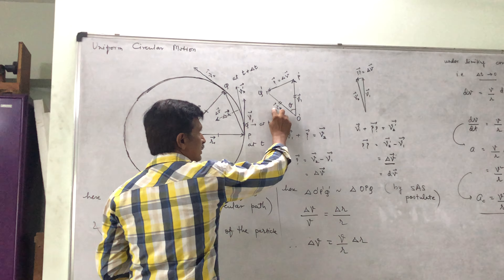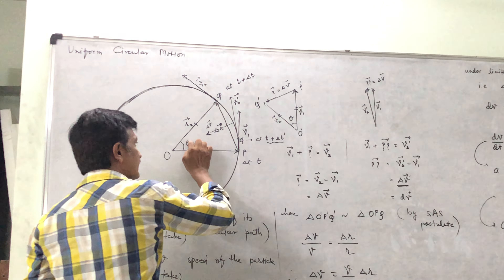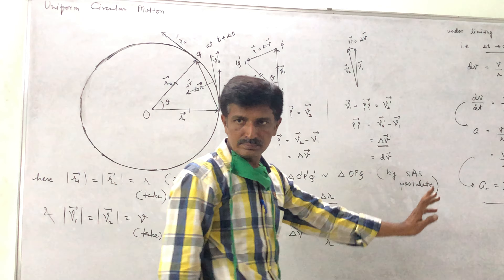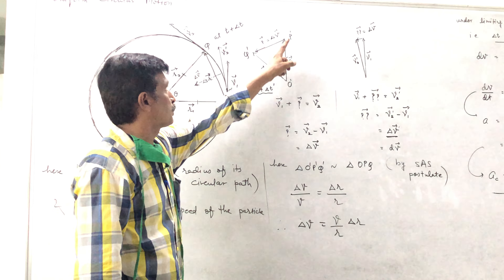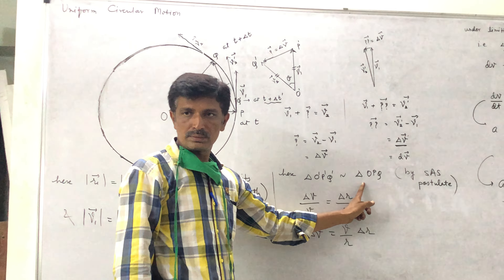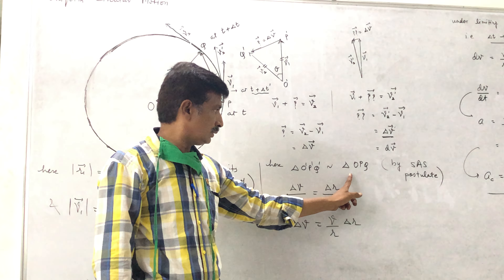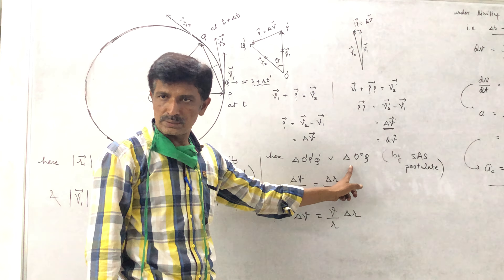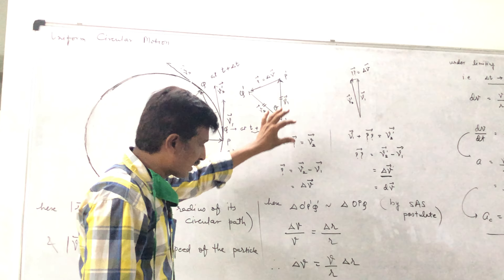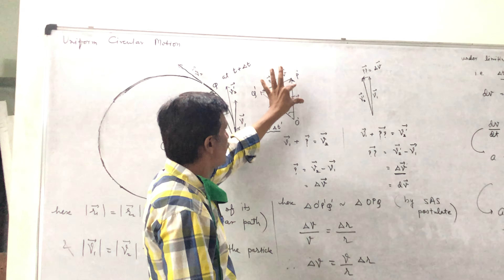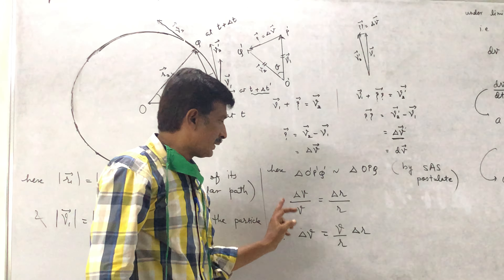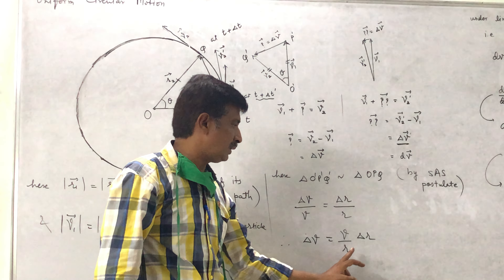Since we have uniform circular motion, speed is constant, so the magnitude of v1 equals the magnitude of v2 equals v. And since both position vectors are radii of the same circle, the magnitude of r1 equals the magnitude of r2 equals r. So by the SAS postulate, triangle O-P-Q and triangle O'-P'-Q' are similar. In similar triangles sides are in the same proportion, so delta v divided by v equals delta r divided by r. Therefore delta v equals v divided by r, multiplied by delta r.